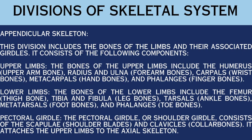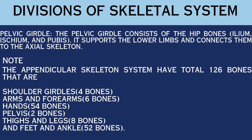The bones of the lower limbs include the femur (thigh bone), tibia and fibula (leg bones), tarsals (ankle bones), metatarsals (foot bones), and phalanges (toe bones). The pectoral girdle, or shoulder girdle, consists of the scapulae (shoulder blades) and clavicles (collar bones), and attaches the upper limbs to the axial skeleton. The pelvic girdle consists of the hip bones — ilium, ischium, and pubis — supporting the lower limbs and connecting them to the axial skeleton.